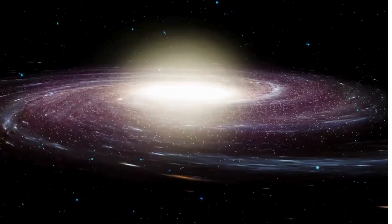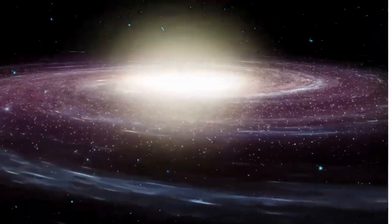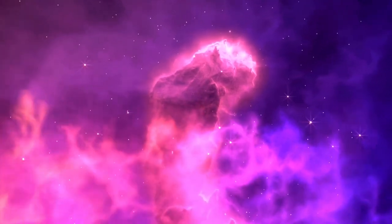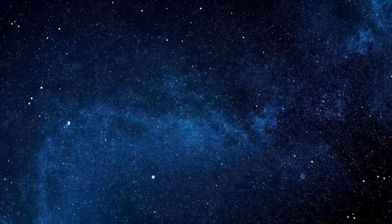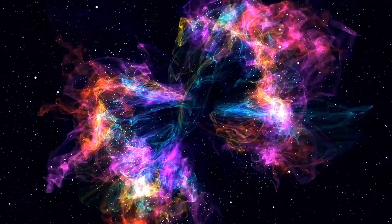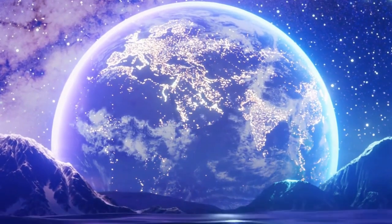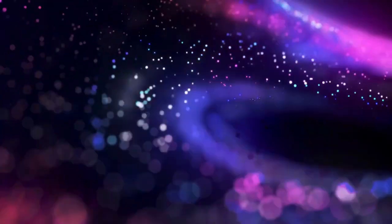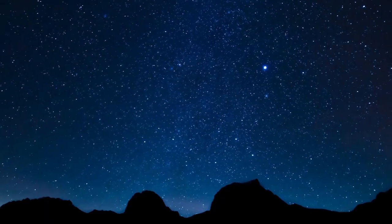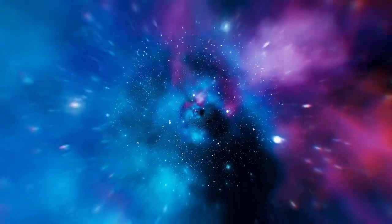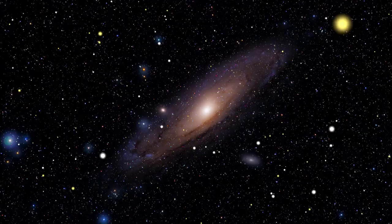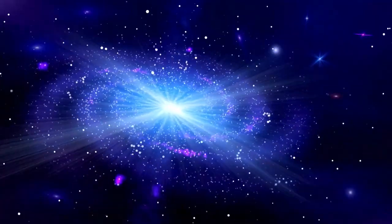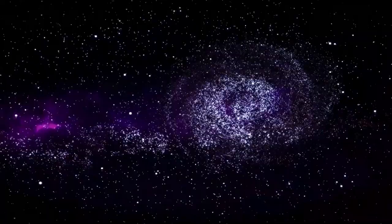The merger will result in profound changes to our night sky and the environment on Earth, potentially affecting habitats, biodiversity, and climate. However, this process will occur long after humanity is gone, as our sun will evolve into a red giant and render our solar system uninhabitable in about five billion years. The merger of Andromeda and the Milky Way raises questions about the fate of our solar system and the formation of new galactic structures. The cosmic interactions will shape a new galactic environment, possibly with habitable zones for potential life forms, although vastly different from what we know today.